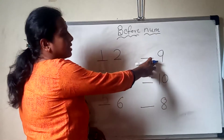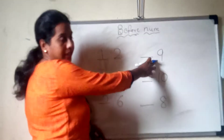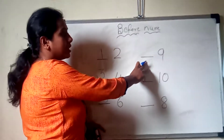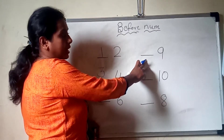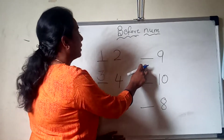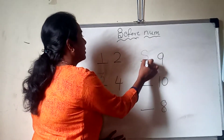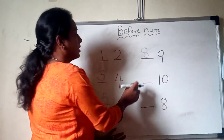Now next, which number is here? 9. Which number comes before here? 8. Very good. So we are going to write here 8.